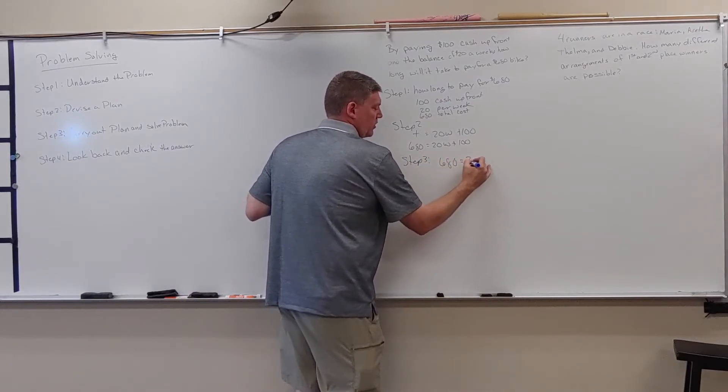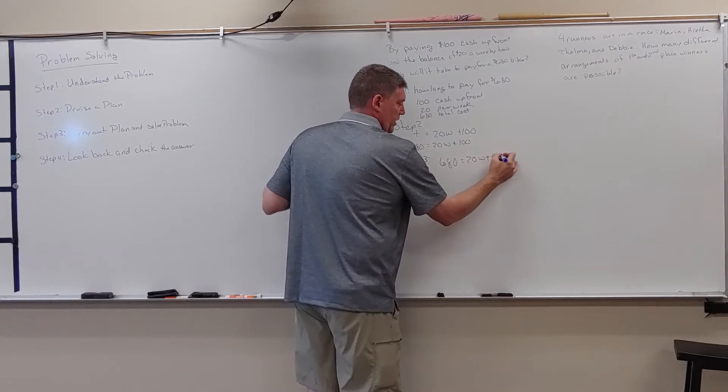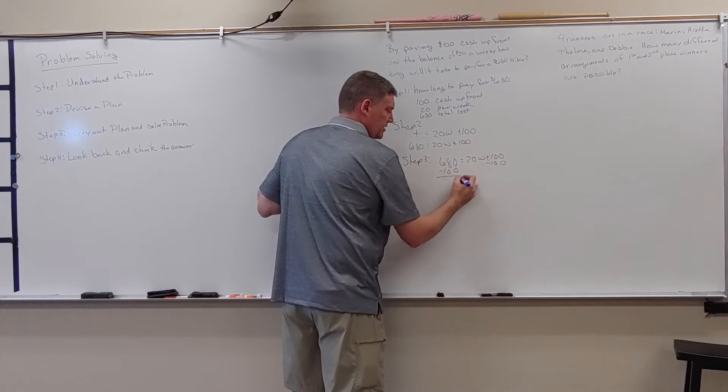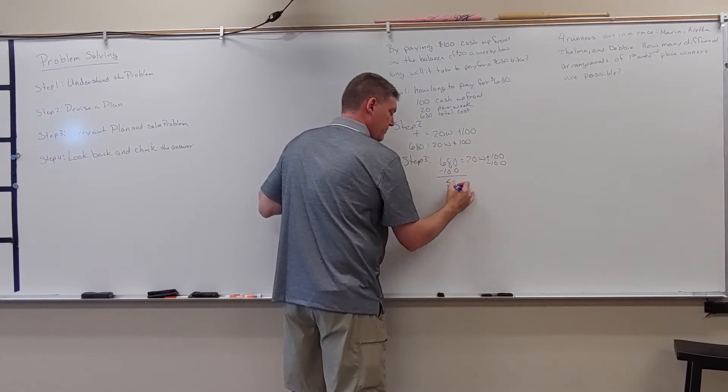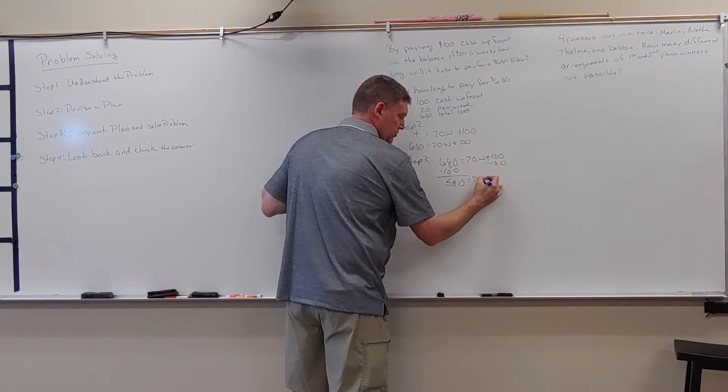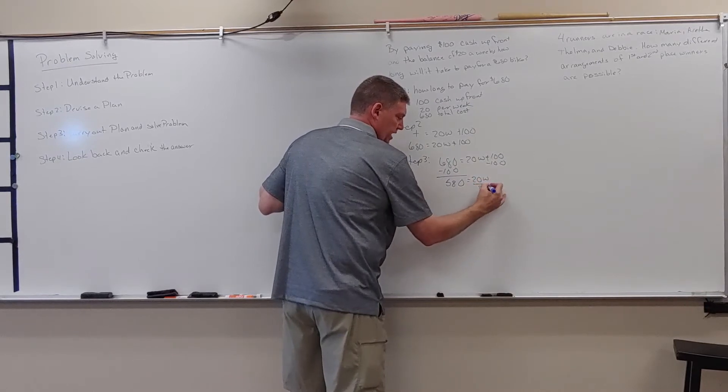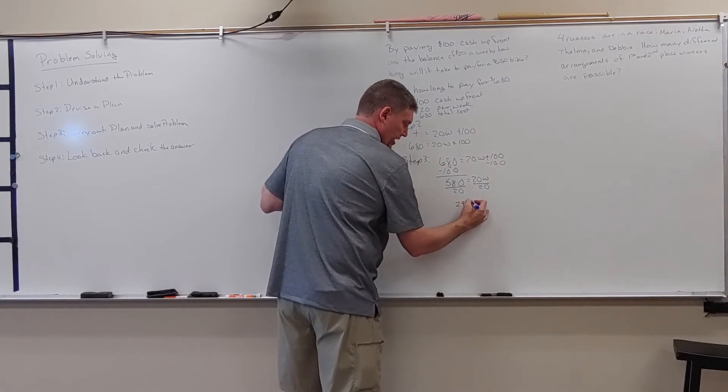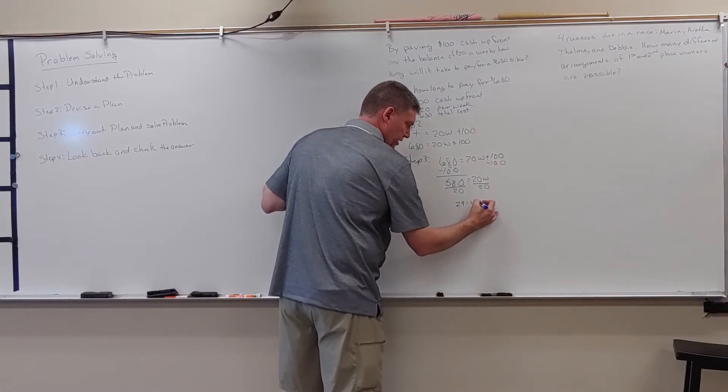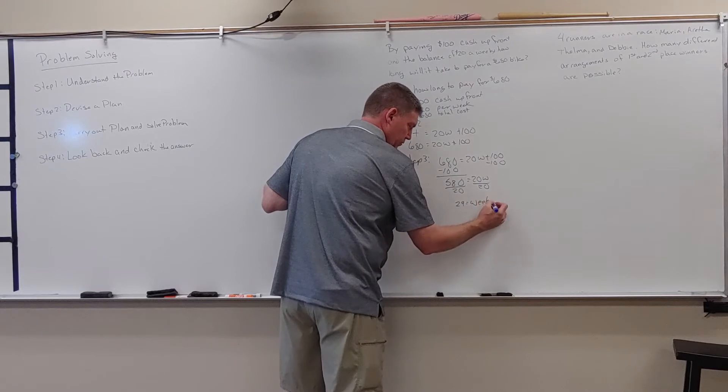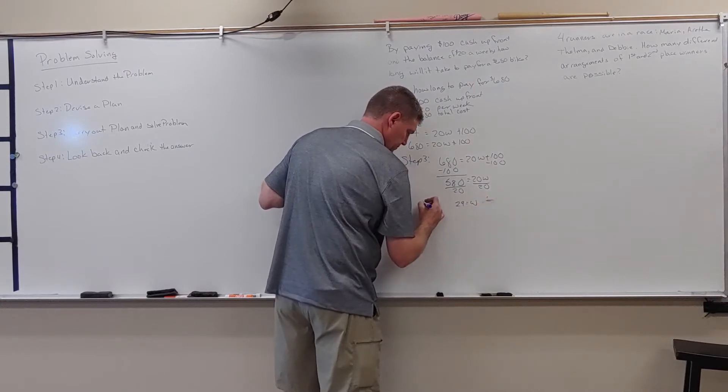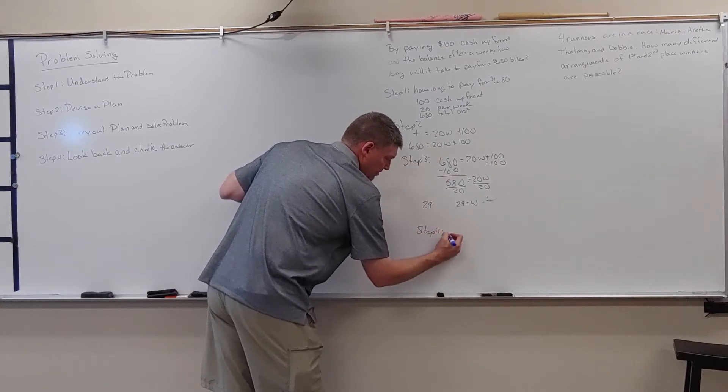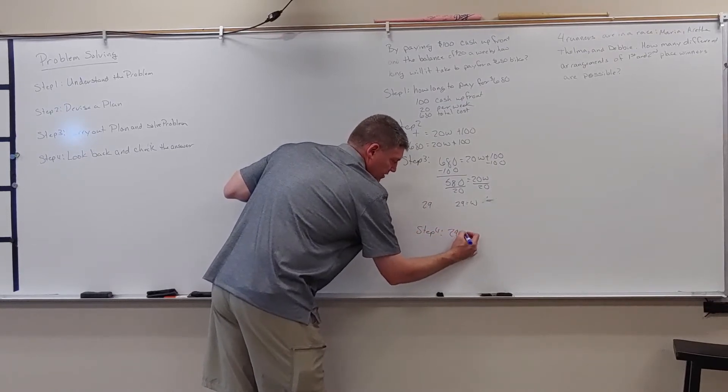$680 equals 20W plus 100. I'm going to solve this. I'm going to subtract 100, subtract 100. This gives me 580 equals 20W, divide by 20, divide by 20, 29 equals W. So we would have 29 weeks.